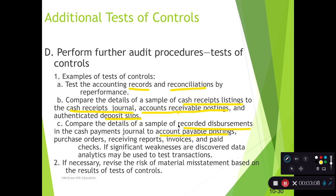If our client paid the supplier, let's go look at that supplier's AP subsidiary ledger account and see that payment — it should be posted. Then we can also go backwards and connect that disbursement to the purchase order, receiving report, invoice, and the actual checks from the bank.